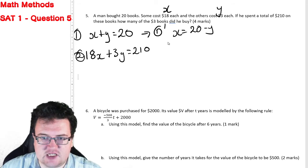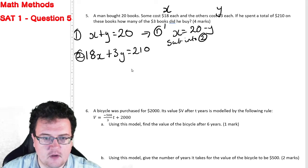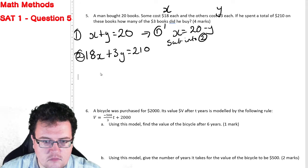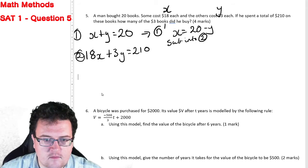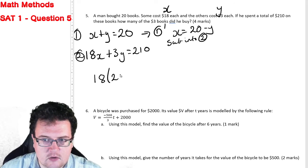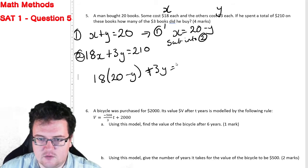And then if I sub that into equation two, I end up with 18 bracket 20 minus Y plus 3Y equals 210.